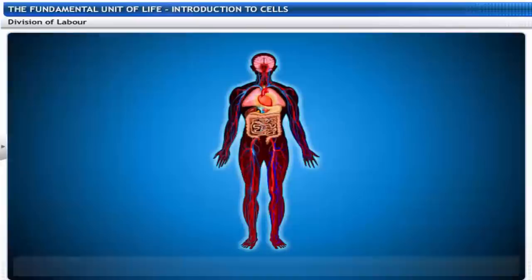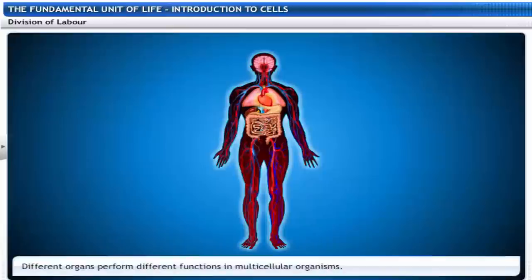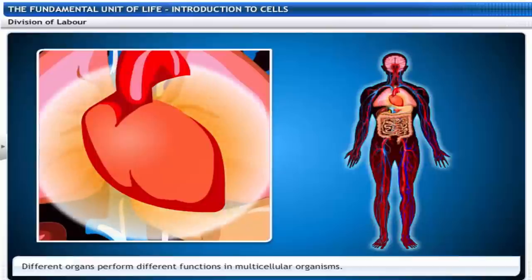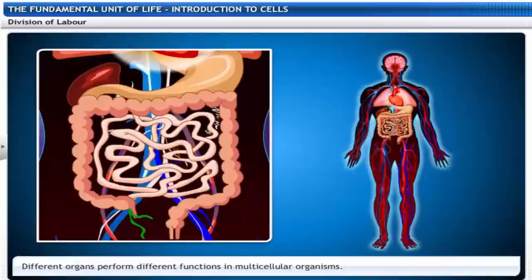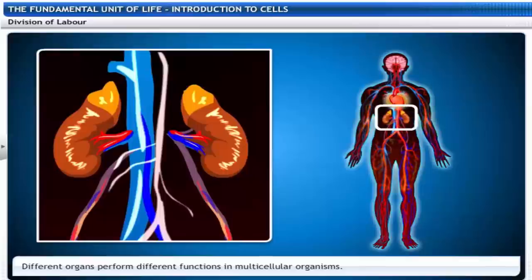On the other hand, different organs perform different functions in multicellular organisms. For example, the human body has a heart to pump blood, a stomach to digest food, and kidneys to excrete waste.